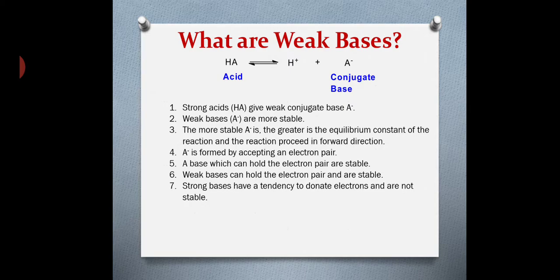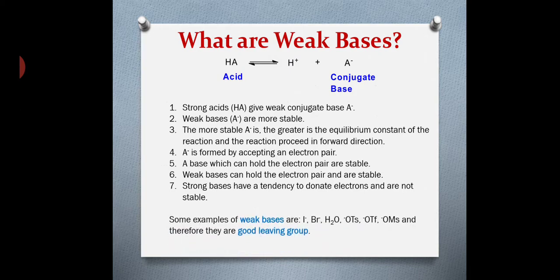Weak bases are stable because they can hold the negative charge developed on them. Strong bases are not stable because they have a tendency to donate the electron — the negative charge — rather than holding it. Some examples of weak bases are iodide, bromide, water, and sulfonates, and according to the key rule, since they are weak bases, they are good leaving groups.